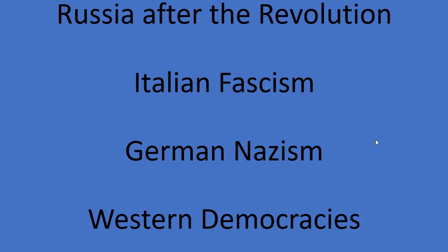In this presentation, we'll examine how Russia was faring after the Russian Revolution, the emergence of fascism in Italy, the growth of Nazism in Germany, and finally we'll take a look at what the democratic nations of Great Britain, France, and the United States were doing between the wars.